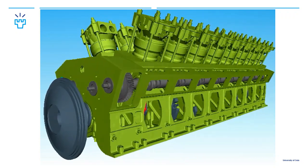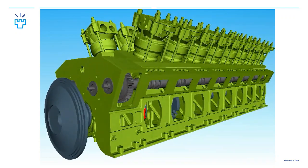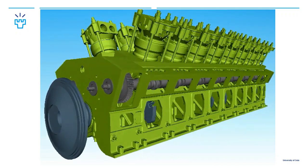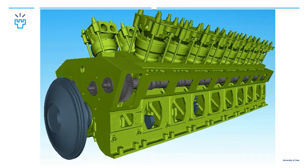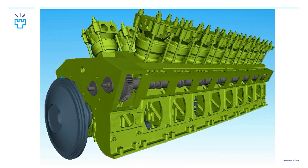The simulation modules for the big engine were built successfully using both software, and the results correlated with each other on a reasonable level. In general, differences are in the feature richness and user friendliness of the software. The graphical user interface of Software S is more advanced and user friendly, whereas Software E has more features for engine modeling.